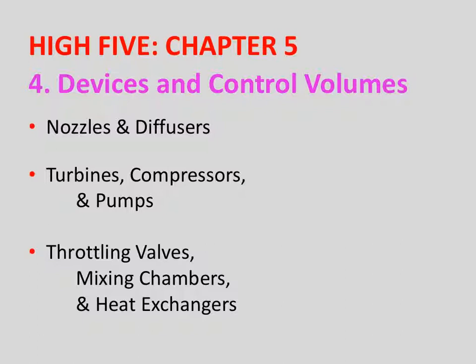Then there's throttling valves, mixing chambers, and heat exchangers. A throttling valve can change the flow rate of a liquid or gas. A mixing chamber has either multiple inlets and one outlet, or multiple inlets and multiple outlets, where the inlets combine to create a separate outlet. A heat exchanger uses the flow rate to move heat.